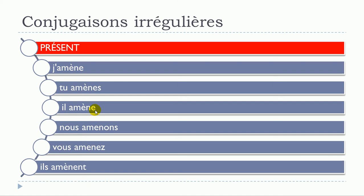Nous amenons — this doesn't change; it's a silent, mute E: amenons. Vous amenez — exactly the same thing, you don't pronounce the E. Then back to the change: amène. So remember, the only thing you need to modify is to add l'accent grave on top of the E.